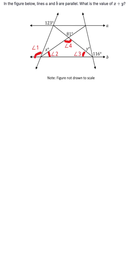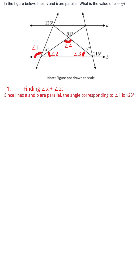To solve the problem, let's mark the four angles as shown above. Step 1: Finding angle x plus angle 2. Since lines A and B are parallel, the angle corresponding to angle 1 is 123 degrees.